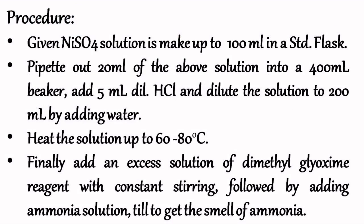Now let us discuss the procedure involved in estimation of nickel. The given nickel sulphate is made up to 100 ml in a standard flask. Pipette out 20 ml of the made-up solution into a 400 ml beaker. Add 5 ml of dilute hydrochloric acid and dilute the solution to 200 ml by adding water. Heat the above solution up to 60 to 80 degrees centigrade.